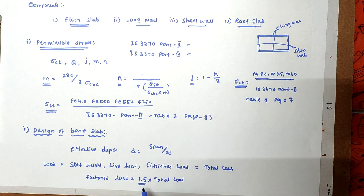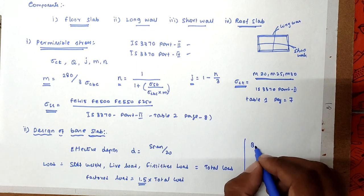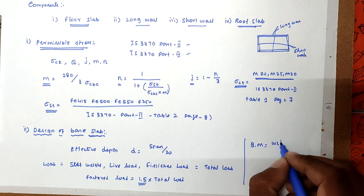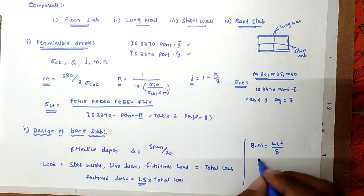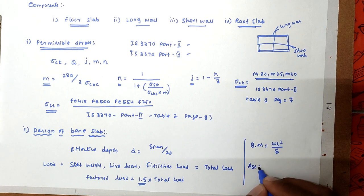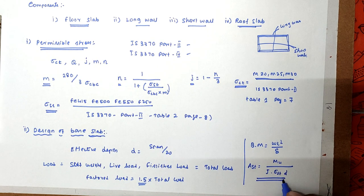After that, we calculate the bending moment: bending moment is equal to W L squared by 8. After the moment calculation, we calculate the reinforcement AST using the formula: AST equals MU divided by (J into sigma ST into D). Using this formula, we find the area of steel required for the base slab.